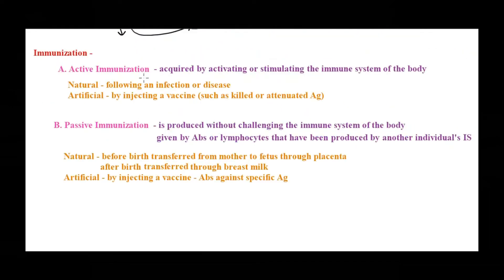Now let me explain the different ways we can acquire immunization and where vaccination fits among them. Immunization can be of two types: active immunization or passive immunization. Active means we are activating the immune system — the immune system is provoked. In passive immunization, immune resistance is given without challenging the immune system, meaning you are giving some ready-made preparation for immune resistance.